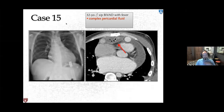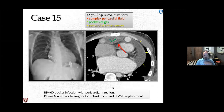Case 15: a 32-year-old male status post BiVAD with fever, presenting with a complex pericardial effusion. CT shows differing densities in pericardial fluid, pockets of gas, and pericardial enhancement — consistent with a BiVAD pocket infection with pericardial infection. The patient was taken back to surgery for debridement and device replacement.